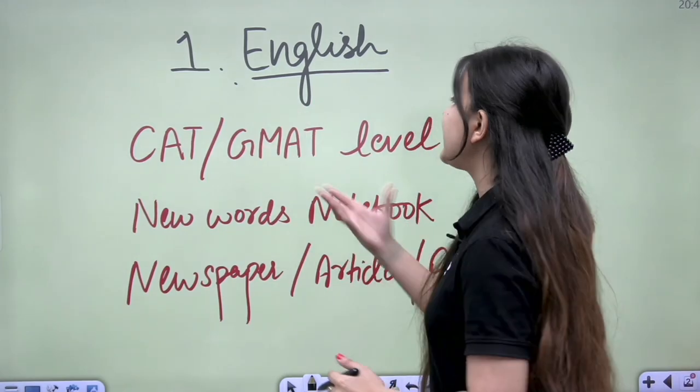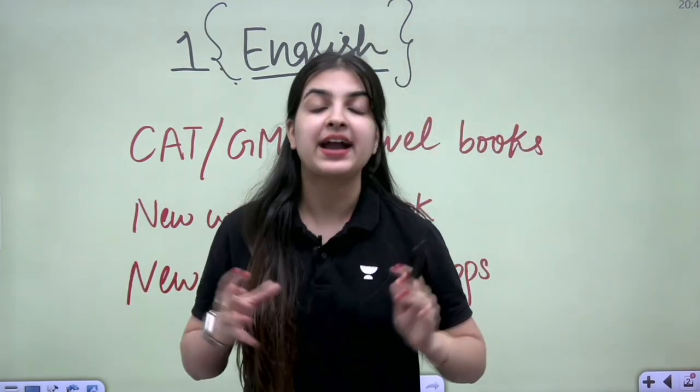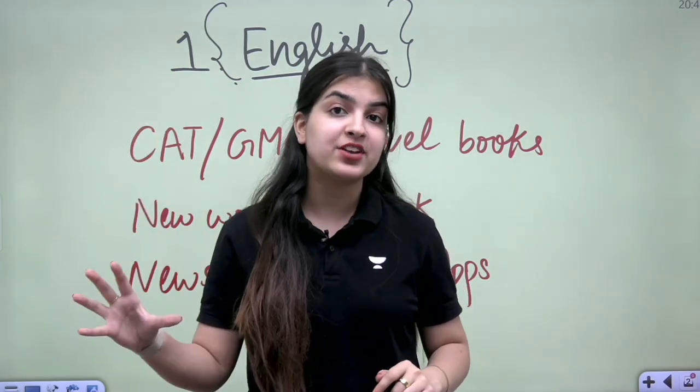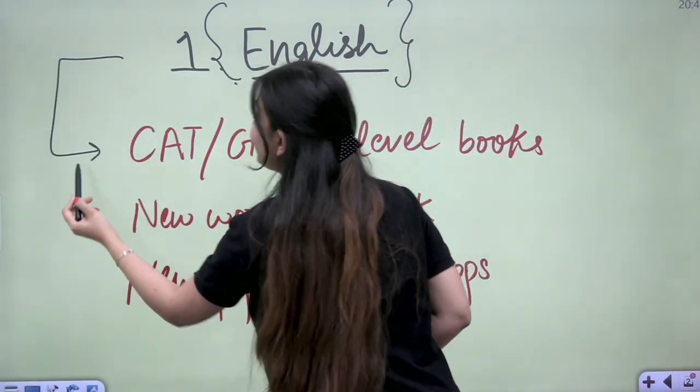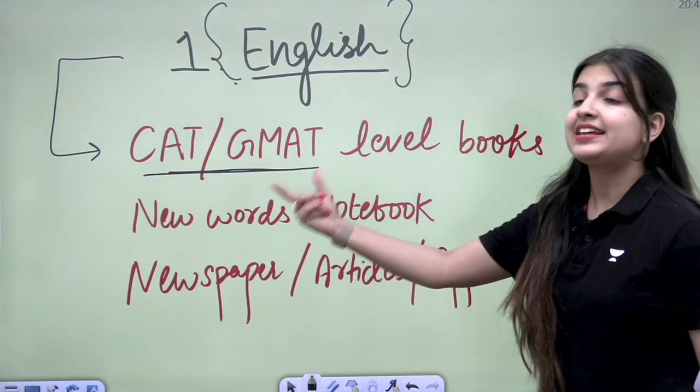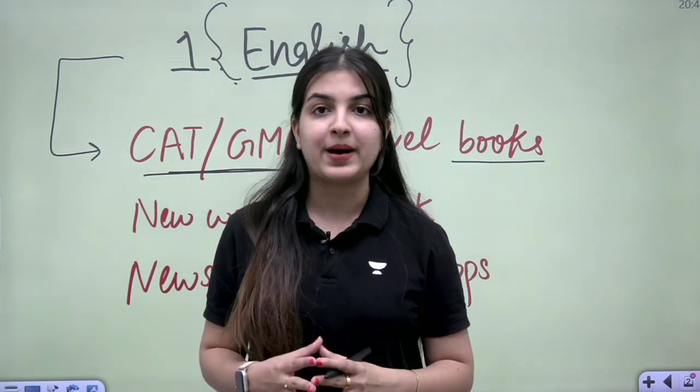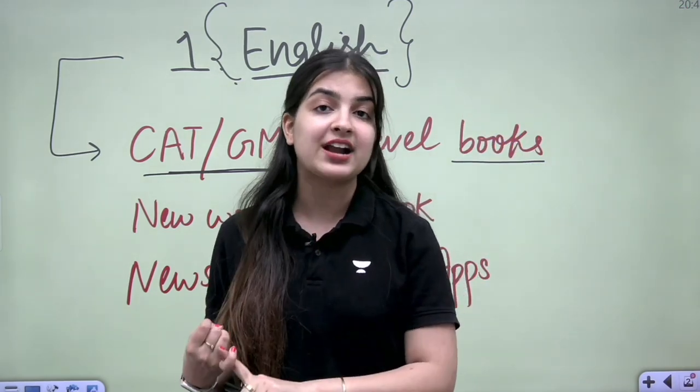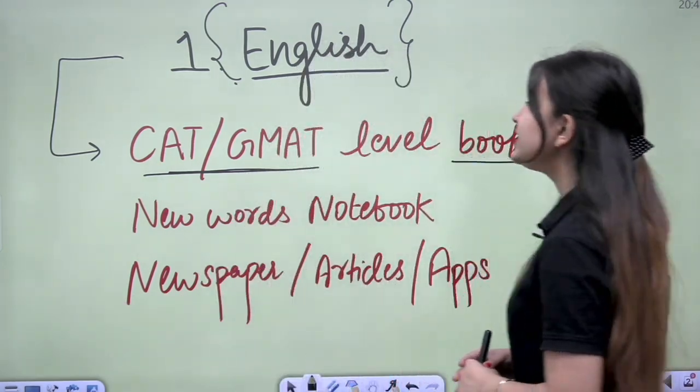So first of all, our first and basic section is English. The English level that comes in CLAT exam is CAT or GMAT level. So CAT or GMAT level books, one book by Arun Sharma and Minakshi Upadhyay will be very helpful here. This book will talk about tricks, tips, how to study RC, how to solve questions. We will practice as well. So the number one source is this.